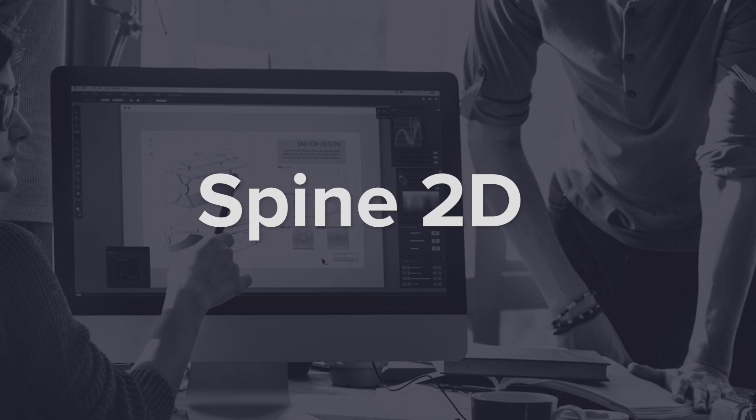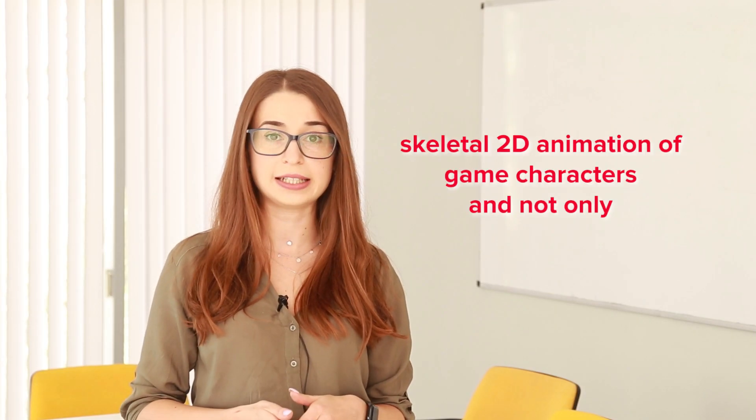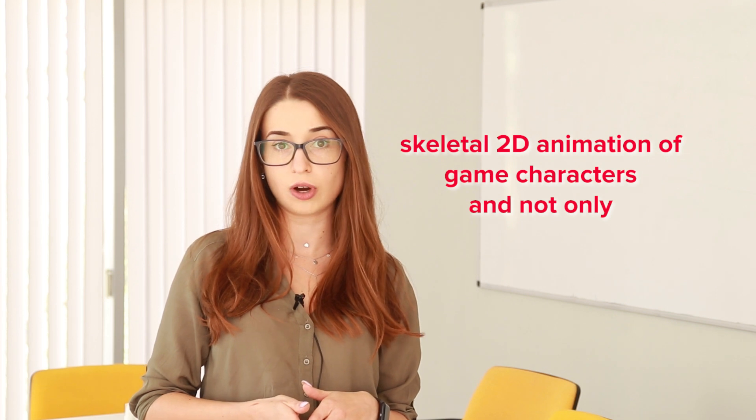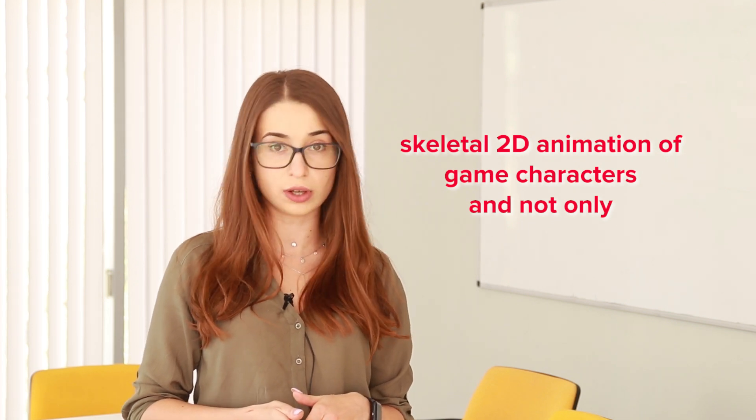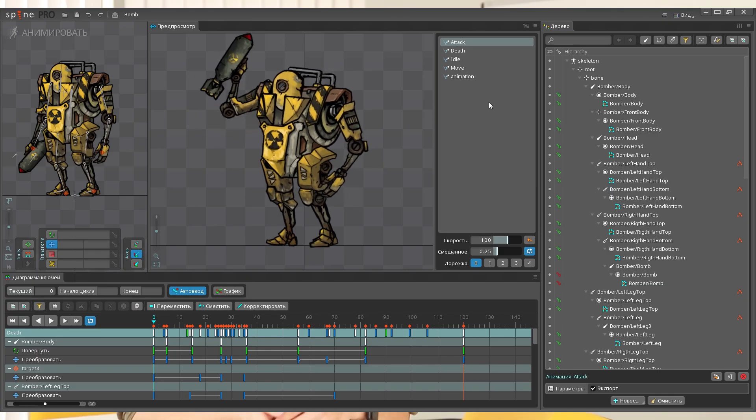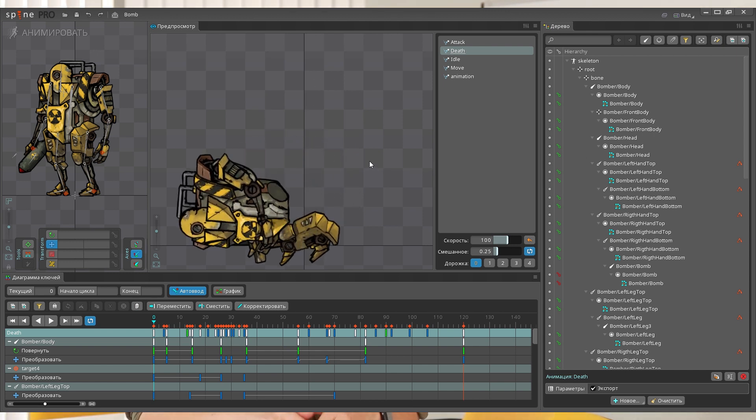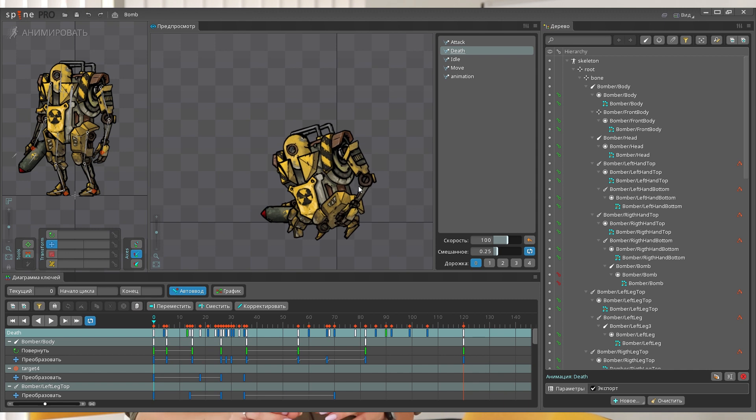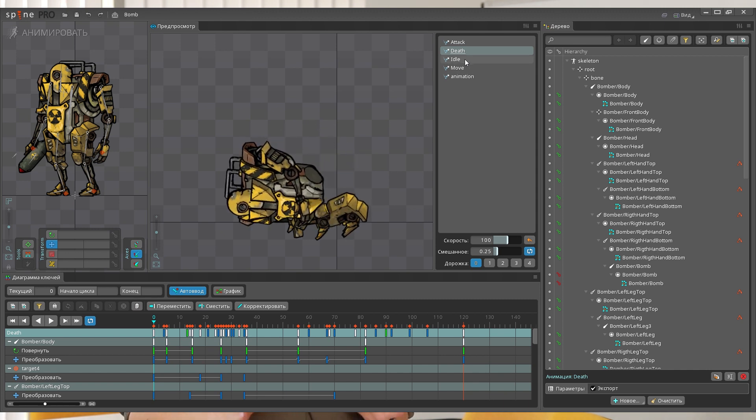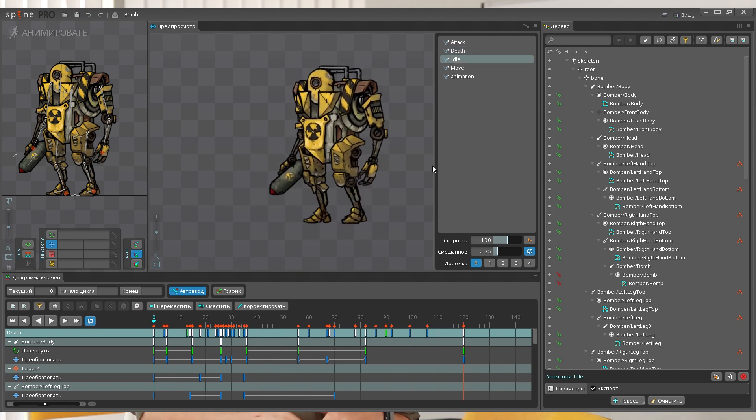Spine 2D is designed to create skeletal 2D animation of game characters and not only. For this, instead of a whole image of the character, we need separate parts, which will be subsequently animated by linking the bones. It is very easy to control the skeletal animation, because when one bone is involved, the other bones will also be involved. Thanks to this, the user does not need to animate every single part.